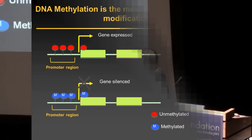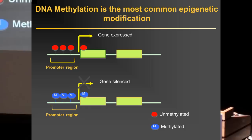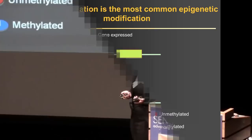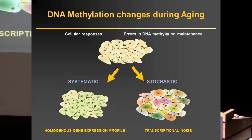Just a brief background: we are really interested in DNA methylation, which is the most common epigenetic modification. DNA methylation occurs in cytosines in CpG nucleotides. Hypomethylated promoter regions have been associated with gene expression, while hypermethylated promoter regions are generally associated with gene silencing. This is in part due to the fact that methyl groups interfere with the binding of transcription factors to the promoter regions. DNA methylation changes occur during aging as a consequence of cellular responses and errors in DNA methylation maintenance.